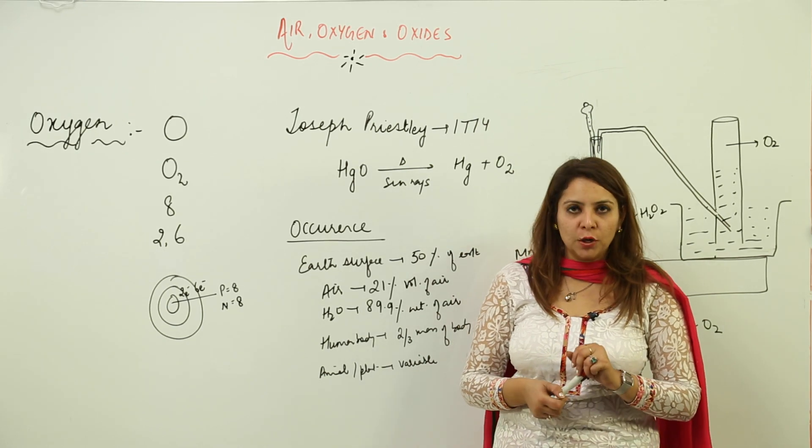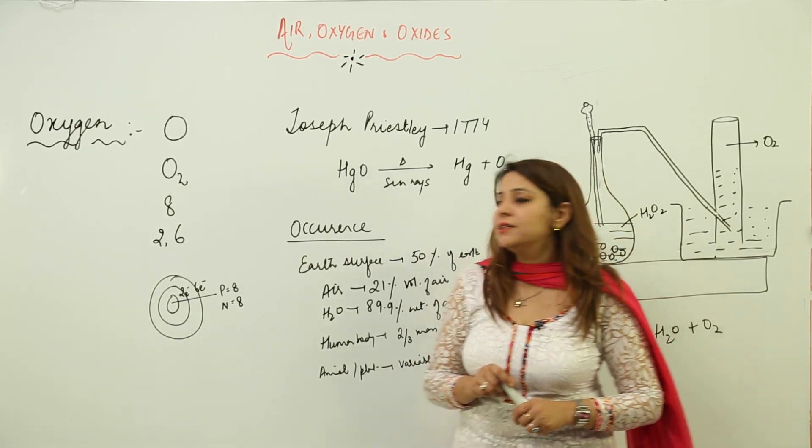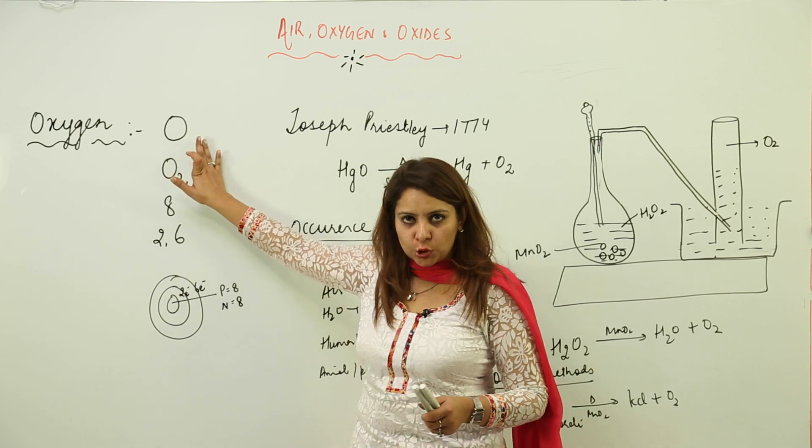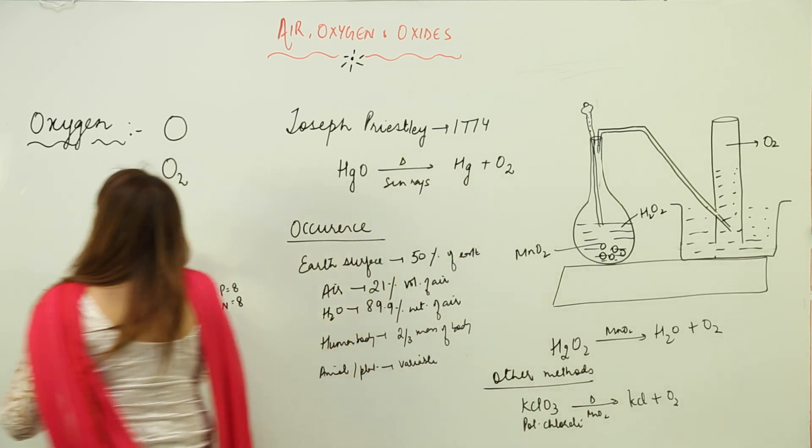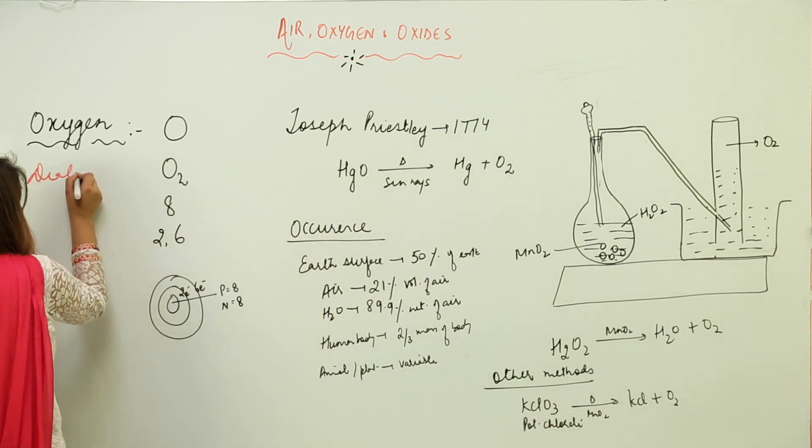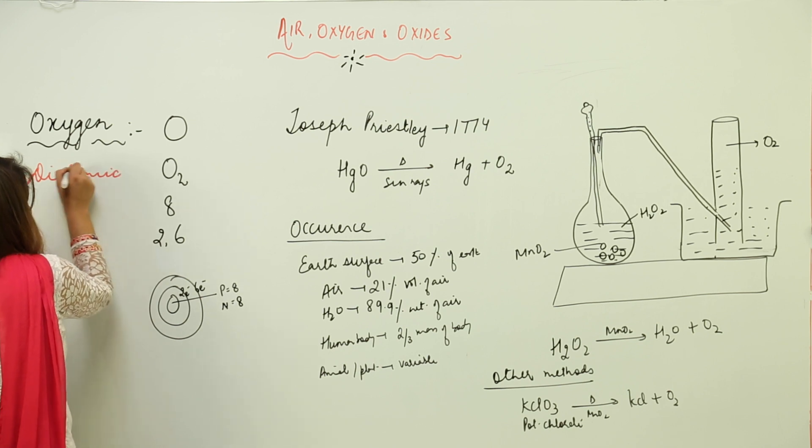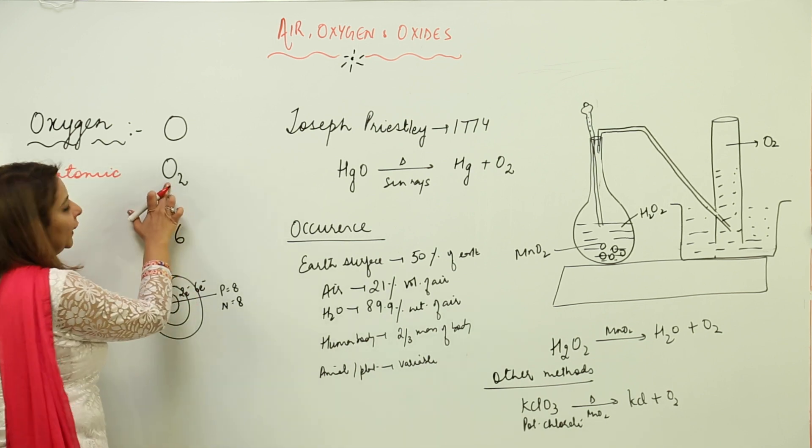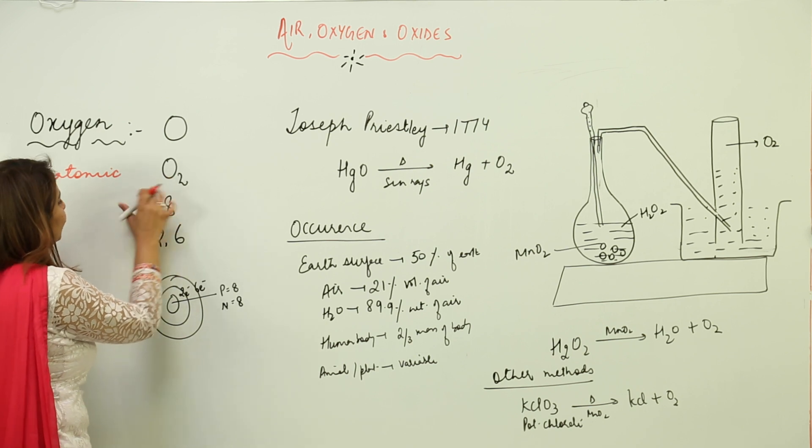Now we are going to study about oxygen. Oxygen's atomic symbol is O, but we know that it is diatomic—that means two atoms of oxygen exist together forming a molecule, that is O2.